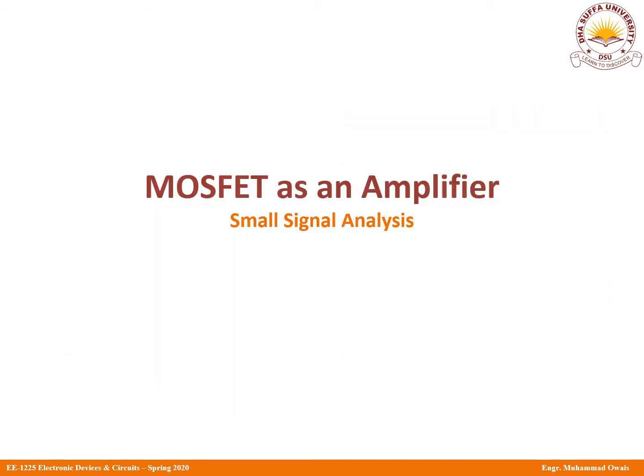At the end of our last lecture, we were able to derive the terminal characteristics for a common source amplifier. Before that, we discussed the basics of small signal analysis for a MOSFET. We also discussed various models like the small signal pi model and the T model. We found that the analysis procedure is pretty similar to what we had been doing in BJTs. Therefore, we continue with that discussion: common source amplifier analysis. After that, we shall discuss the other configurations as well.